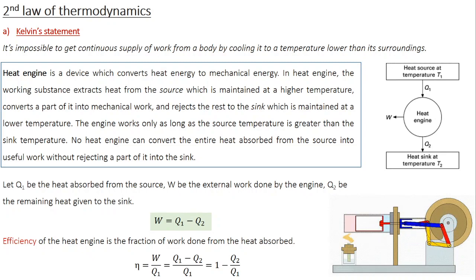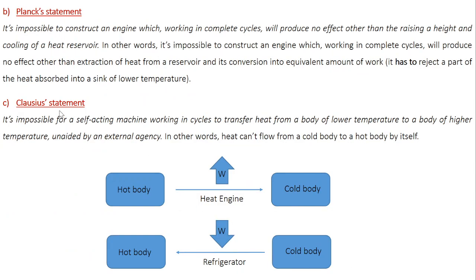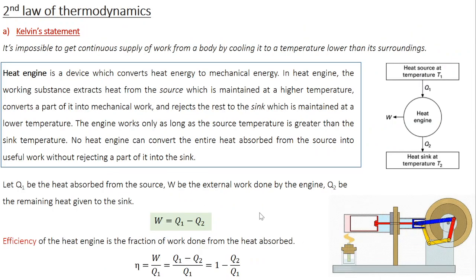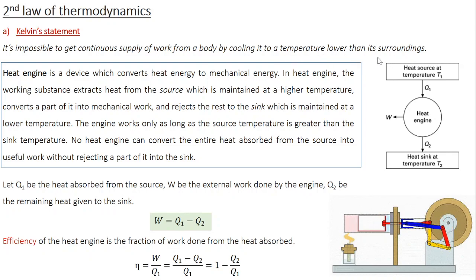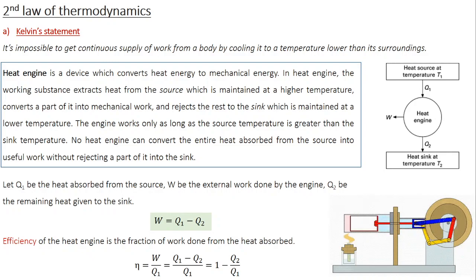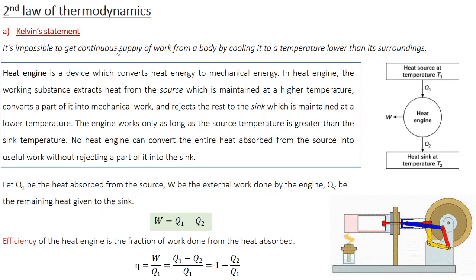Unlike the zeroth and first law, the second law has three statements. The first one is known as the Kelvin statement, the second is the Planck statement, and the third is the Clausius statement. The Kelvin statement says that it is impossible to get a continuous supply of work from a body by cooling it to a temperature lower than its surroundings. This is the fundamental principle behind the working of a heat engine, and understanding a basic heat engine will make the Kelvin statement clearer.